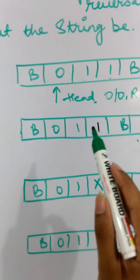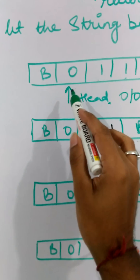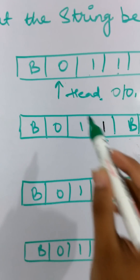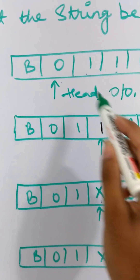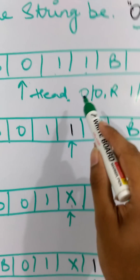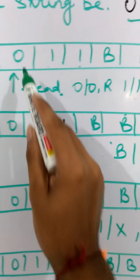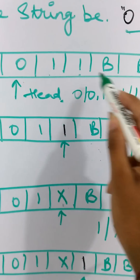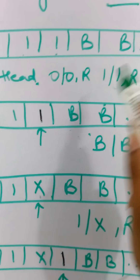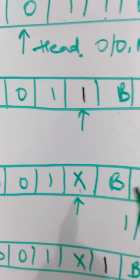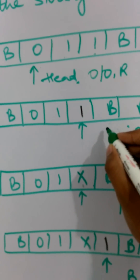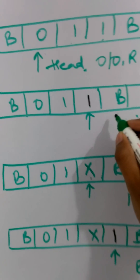So what we will do, we will first check what the input is. If the input is 0 then we will replace it with 0 and we will move our head to the right position. After this it is going to move to the end of this tape. We are going to replace 1 with 1 and then move it to the right. At this position it will reach the blank.